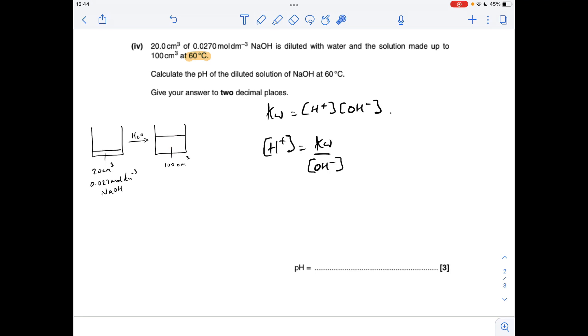So like with all strong alkali pH calculations, we use the Kw expression. We're going to rearrange for the H plus concentration so we can get the pH. So that becomes Kw over the OH minus ion concentration. We know what Kw is at 60 degrees C. We don't know the OH minus ion concentration. So that's what we need to calculate.